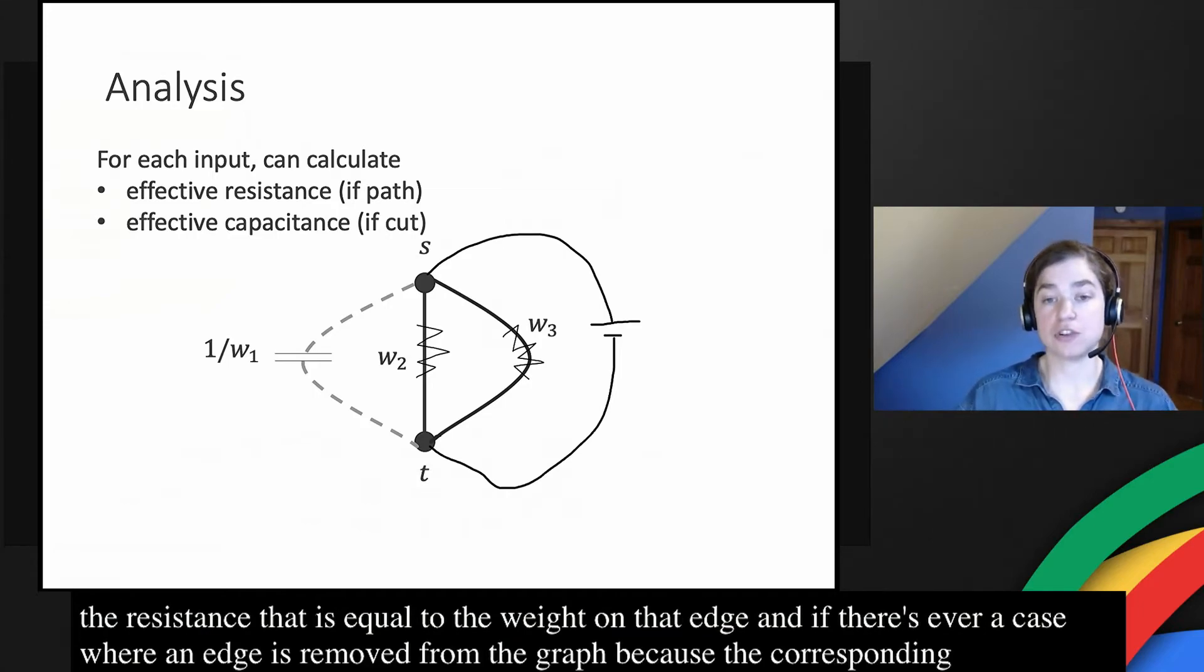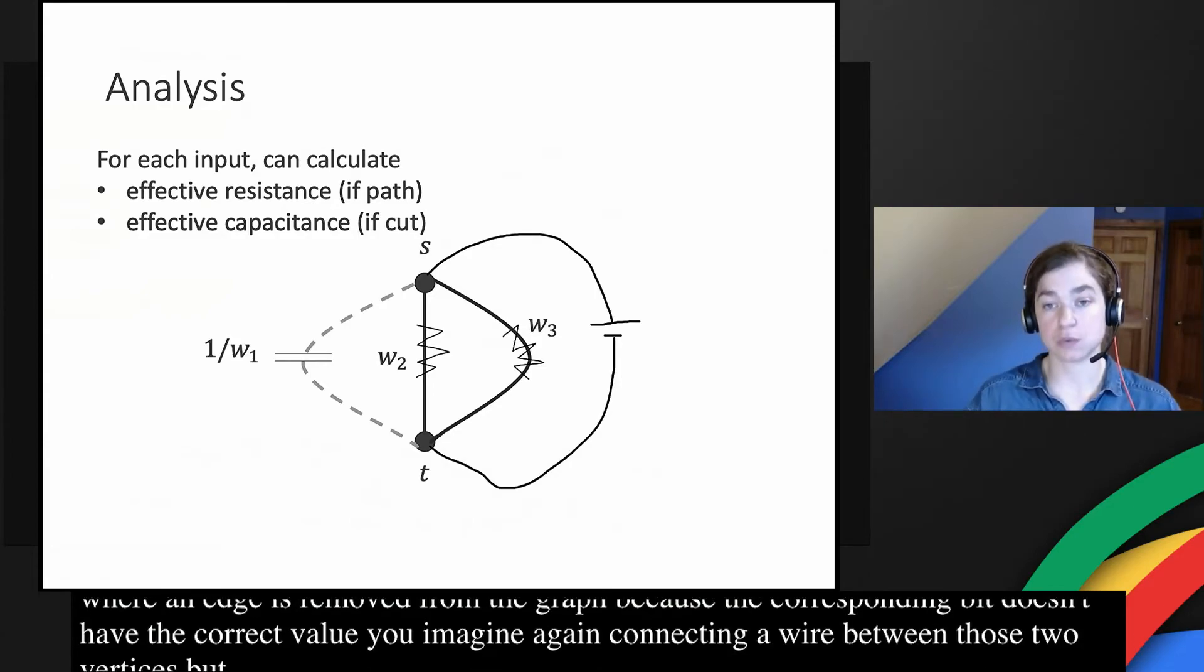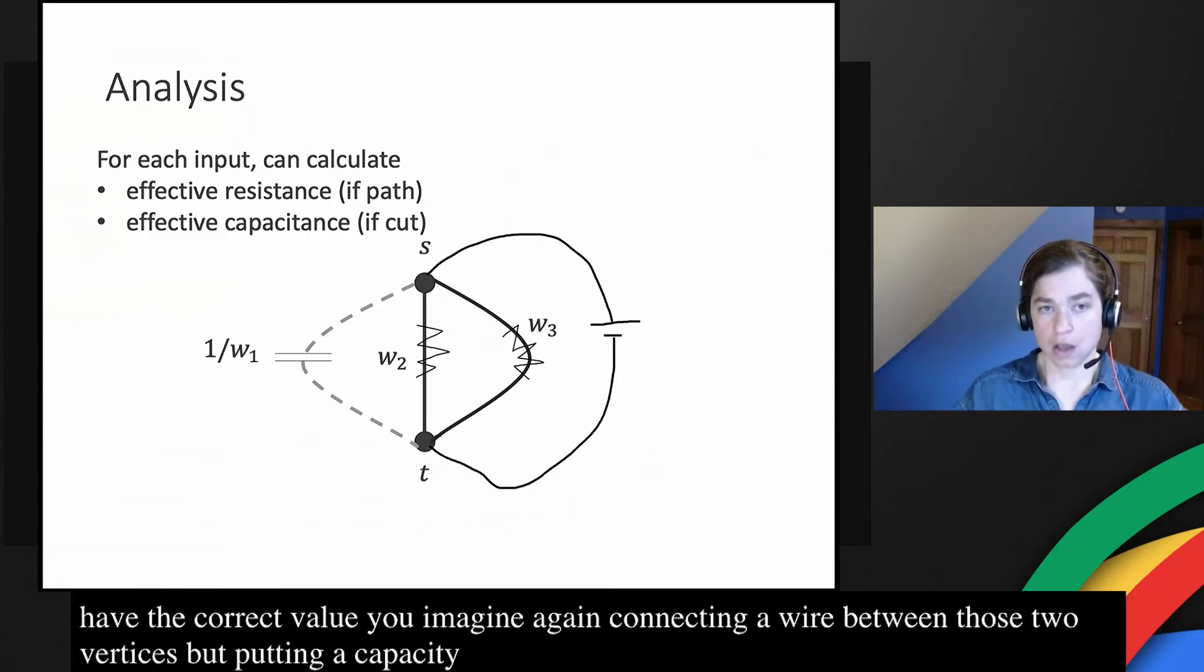Now anytime there is an edge that is actually present in the graph, you imagine putting a resistor there with the resistance that is equal to the weight that's on that edge. And if there's ever a case where an edge is removed from the graph because the corresponding bit doesn't have the correct value, then you imagine connecting a wire between those two vertices, but putting a capacitor on with capacitance one over the weight.